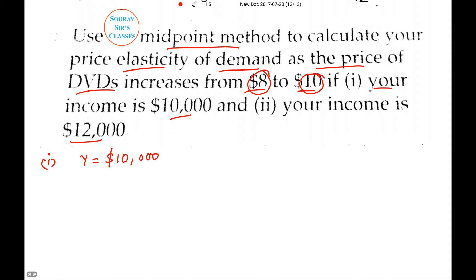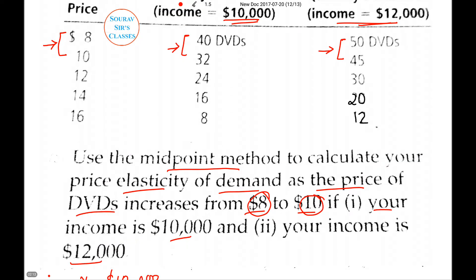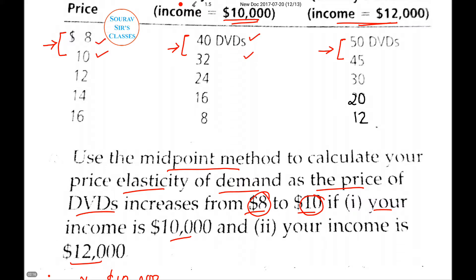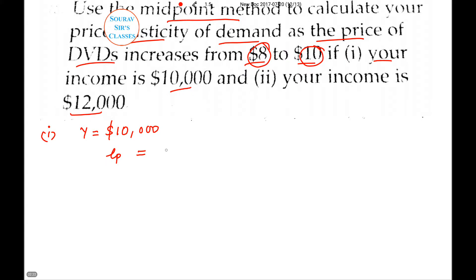Price elasticity of demand for compact discs when the price rises from $8 to $10. The quantity demanded values are 40 and 32. The formula is: final minus initial quantity, divided by the midpoint. The midpoint of quantity is 40 plus 32 divided by 2, which equals 36. So the numerator is 32 minus 40 divided by 36, giving us negative 8 over 36.